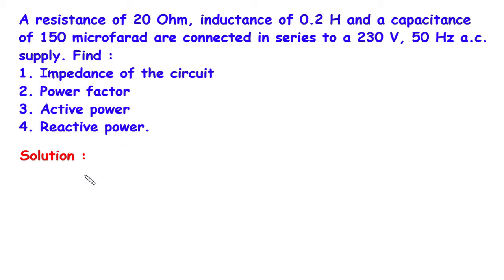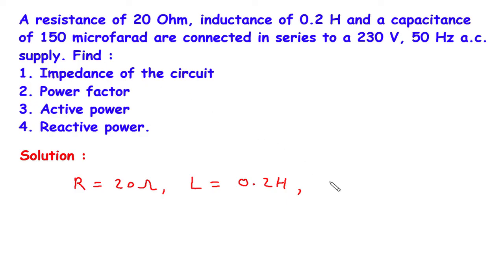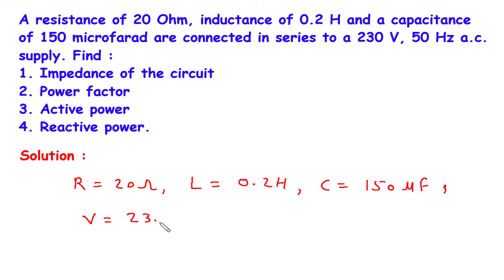First of all we will write what is given. The value of resistance is given, so R is equal to 20 Ohm. The value of inductance is given, so L is equal to 0.2 Henry. The value of capacitance is also given, C is equal to 150 microfarad. The value of voltage V is equal to 230V. The value of frequency F is equal to 50Hz.